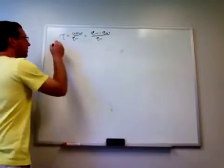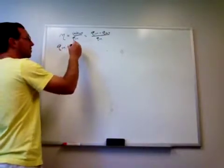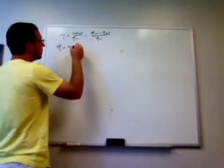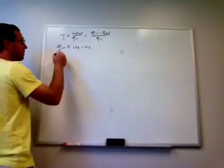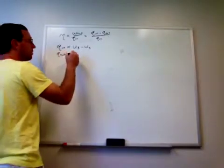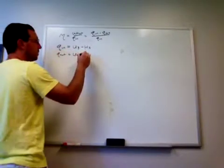We solved equations for Q in. We said it was U3 minus U2 and we said Q out was U4 minus U1.